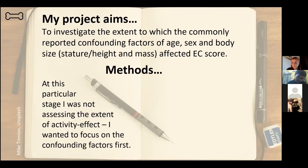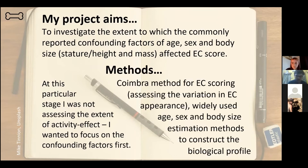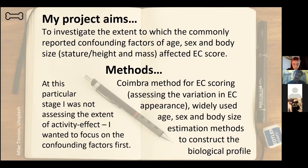The method I used to score EC in my sample was the recently developed Coimbra method — more on this in the next slide, which will have photos of bones in it. The methods I used to construct the biological profile for each individual, which includes the estimations for age, sex, height, and mass, I followed standardized methods widely used in osteology.